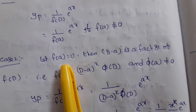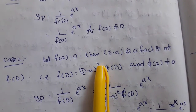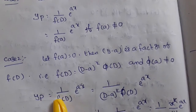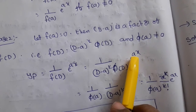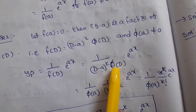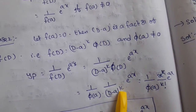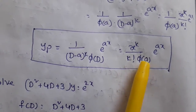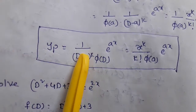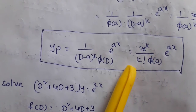If f(a) = 0, then (D - a) is a factor of f(D). Then f(D) = (D - a)^k into φ(D), where φ(a) ≠ 0. So yp = 1/[(D-a)^k · φ(D)] into e^(ax). If you replace D with a, φ(a) is not zero, but the (D-a)^k denominator becomes 0. In that case, apply the formula: 1/(D-a)^k · φ(D) · e^(ax) = x^k / (k! · φ(a)) · e^(ax). So if (D-a)² appears, we write x²/2! and so on.